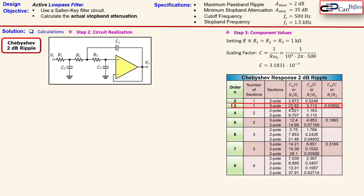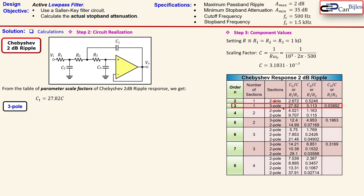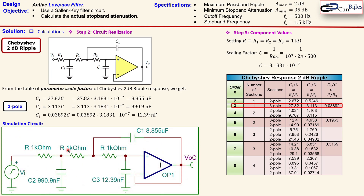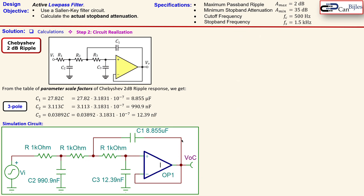For the third-order Chebyshev we use a single three-pole section. From the table we read C1/C, C2/C, and C3/C. The values are: C1 = [coefficient] × C, C2 = 3.113 × C, and C3 = 0.03892 × C. Multiplying by the scaling factor gives us C1 through C3. The LTspice simulation circuit shows R1, R2, R3 all at 1 kΩ and the capacitors including an 8.855 μF capacitor.